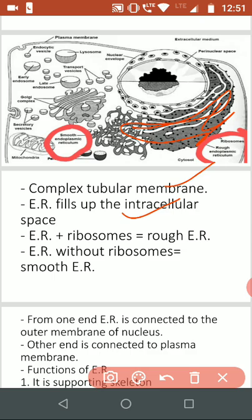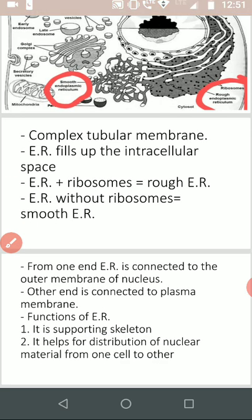Next, endoplasmic reticulum plus ribosomes equals rough ER. Without ribosomes equals smooth ER. That I have explained. Let us see next. Now what is the function of it?